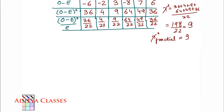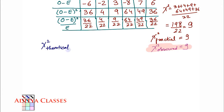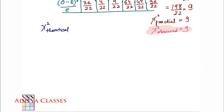Remember, the value we calculate is called chi-square practical or chi-square observed, and it is 9. Now I have my value of chi-square practical. What do we need next? We need chi-square theoretical. From where do we get that theoretical value? We need to check the chi-square table. So let us look at the chi-square table and find the theoretical value for our given case.